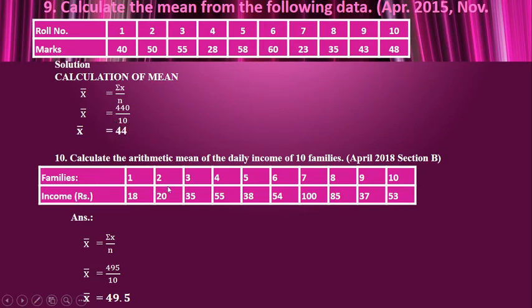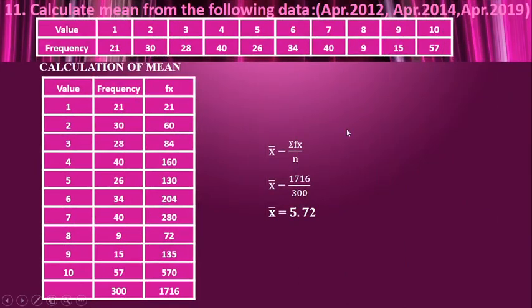This presents family numbers 1 through 10, which is also like a serial number, so you do not consider this column. You will only take the income and find the average for it. So x̄ = σx / n. The total of these values is 495, divided by n = 10. So x̄ is 49.5.